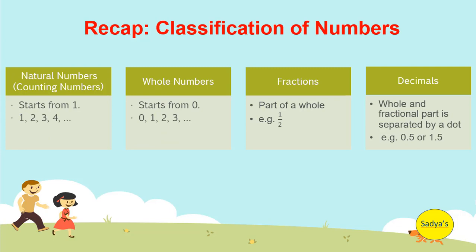Let's recap classification of numbers studied in chapter 1 in previous classes. Natural numbers, also known as counting numbers, start from 1. So 1, 2, 3 and so on. The three dots represent continuity of numbers. If we include zero, natural numbers become whole numbers.